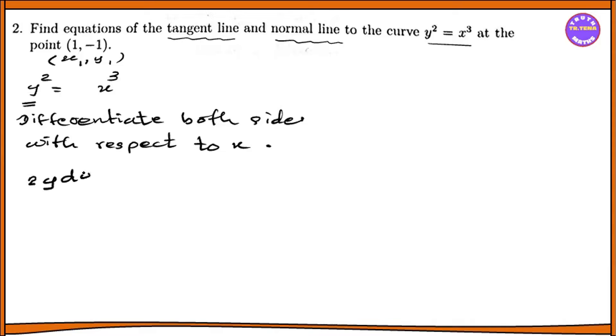We differentiate y squared with respect to x to get 2y times dy/dx. This equals 3x squared. So dy/dx equals 3x squared divided by 2y. This is the equation for m, the slope equals dy/dx.